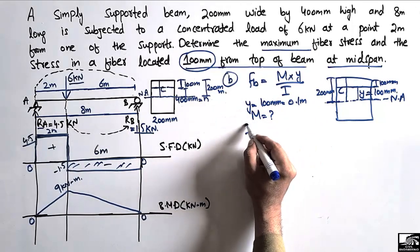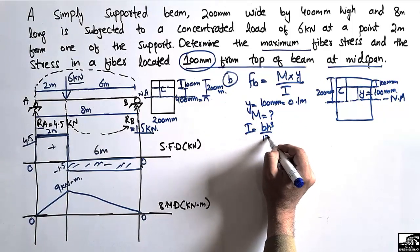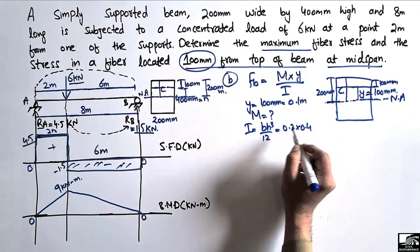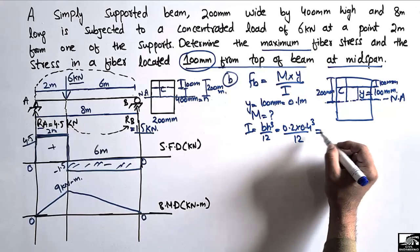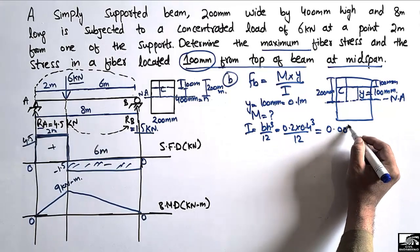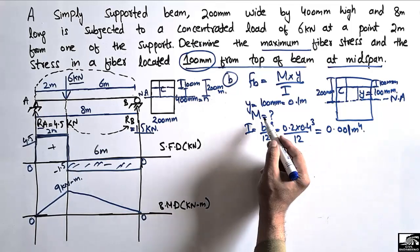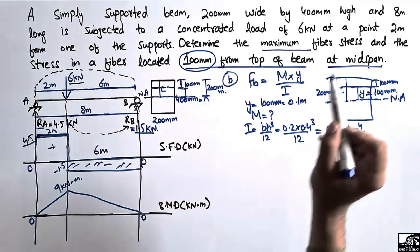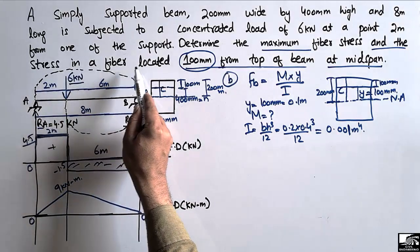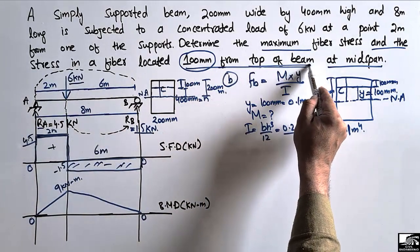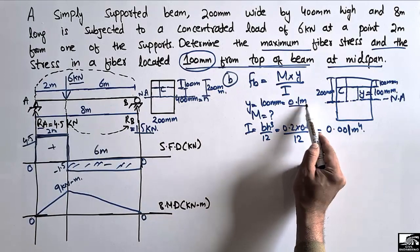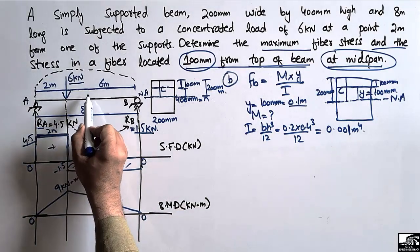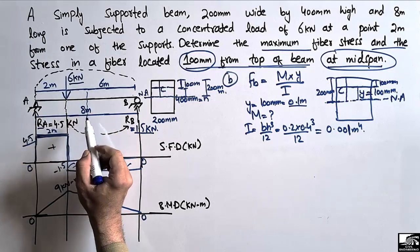The moment of inertia I is again bh³/12: 0.2 multiplied by 0.4 cubed divided by 12 equals 0.001 meter to the power 4, the same value as before. We now need the bending moment at mid span, which is at 4 meter from the left support, since the total length is 8 meter.